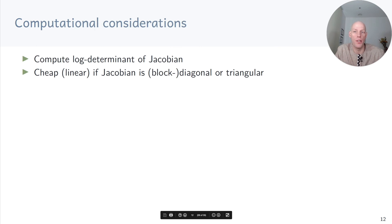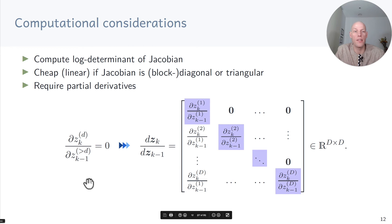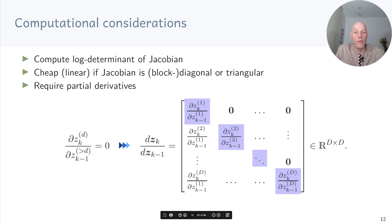There are some computational considerations to be aware of in practice. Computing the log determinant of the Jacobian is computationally expensive in general. But if the Jacobian has a special structure — for example, diagonal or triangular — we can compute the log determinant in linear time. To get a triangular structure, we need to ensure that certain partial derivatives in the Jacobian are zero: specifically, all partial derivatives of the d-th dimension of zk with respect to dimensions greater than d of zk-1 must be zero. If that holds, we get the triangular form, and the determinant is just the product of the diagonal elements.